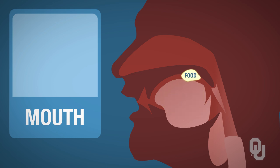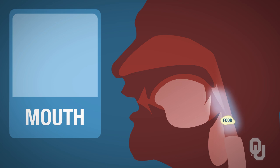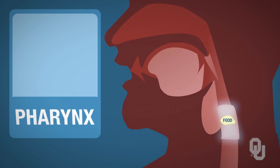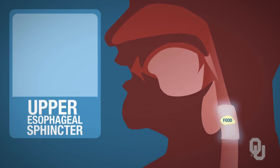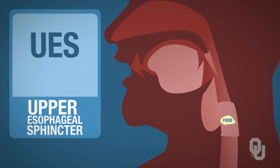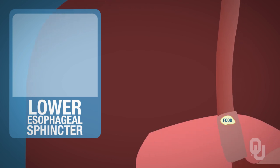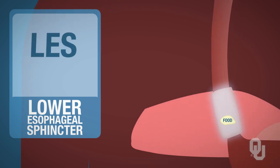Once food exits the mouth, it passes through the next structure, the pharynx — what some people call the throat. From the pharynx, food passes through the upper esophageal sphincter, the UES, and then through the lower esophageal sphincter, the LES.